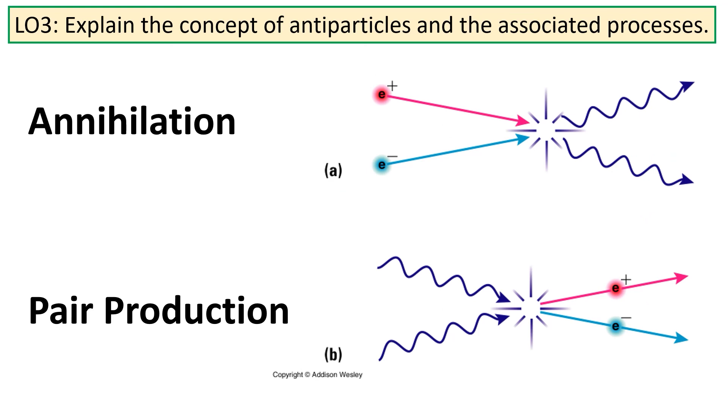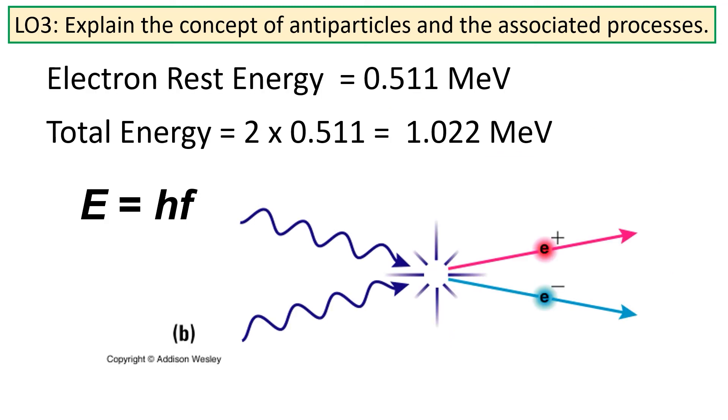The opposite process of annihilation is also possible. Instead of two particles annihilating and creating two photons, it's also possible that a photon can create a pair of particles, that is a particle and an antiparticle. This process is known as pair production. In order for this to happen, the photon would need to have an energy equal to the energy of the particles being created. In this case, the photon would need to have an energy 1.022 mega-electron volts in order to create the particle-antiparticle pair.